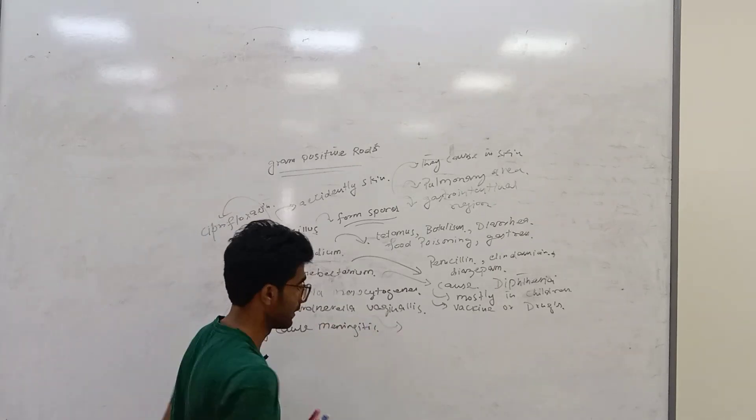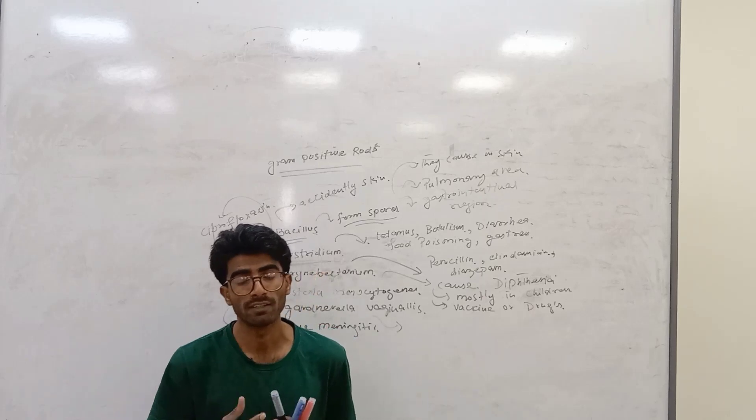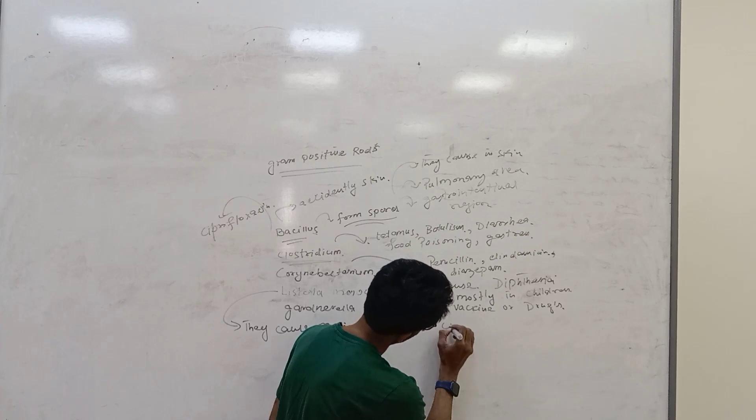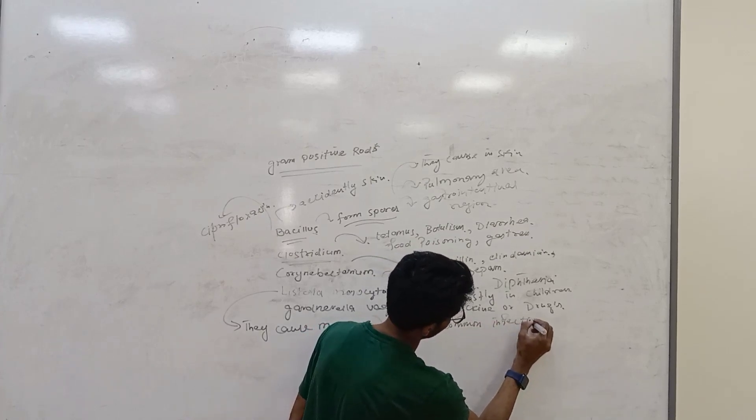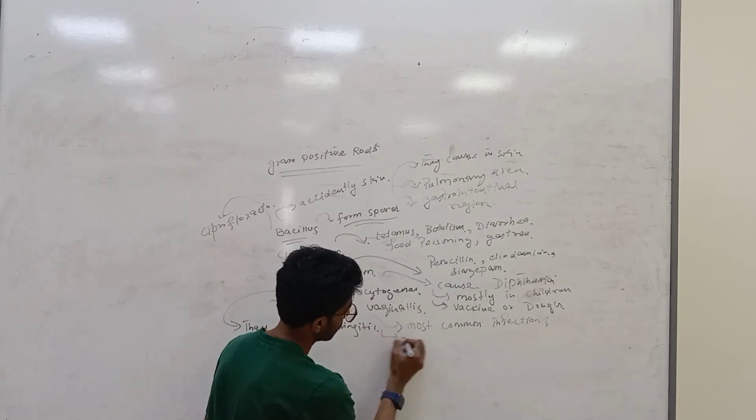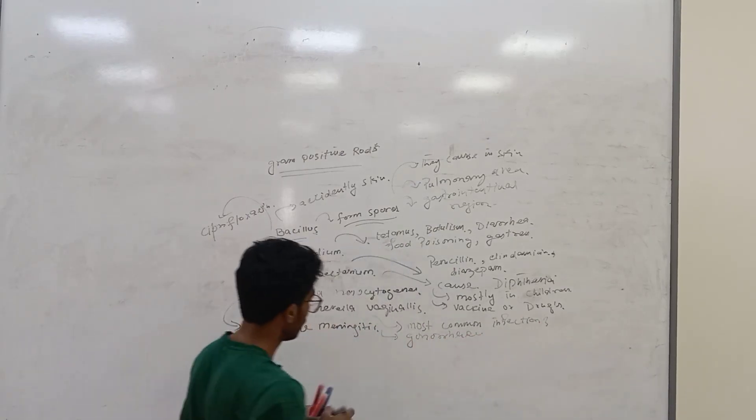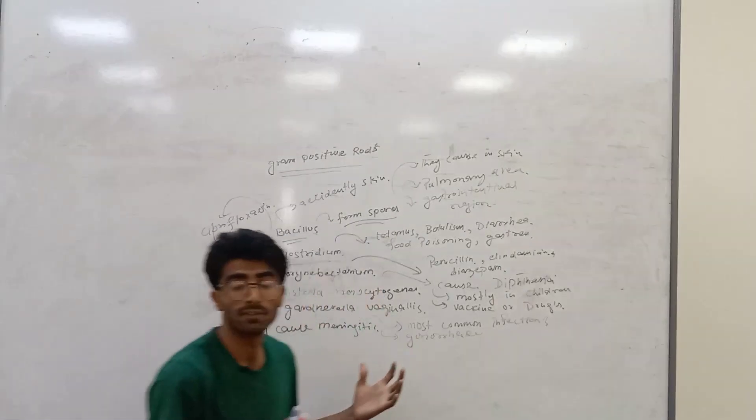Gardnerella vaginalis - the most common infection in the human female reproductive system. Most common infection is gonorrhea, which is due to Gardnerella vaginalis.